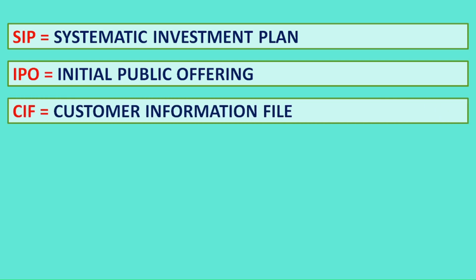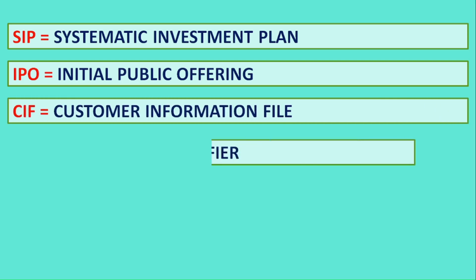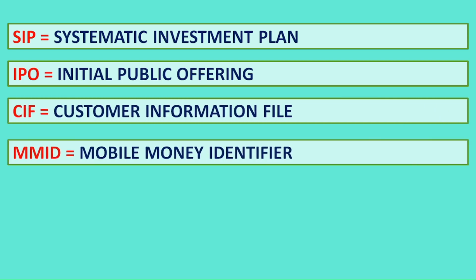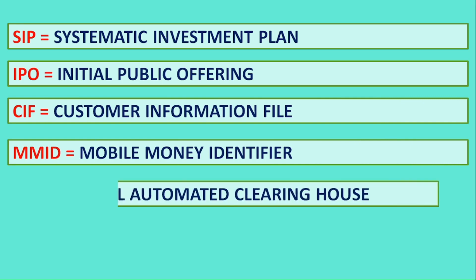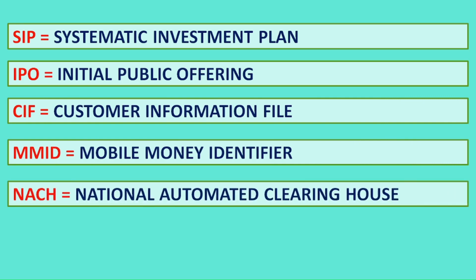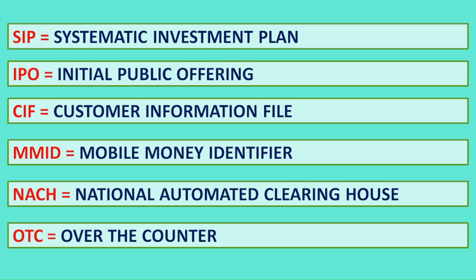CIF: Customer Information File. MMID: Mobile Money Identifier. NACH: National Automated Clearing House. OTC: Over the Counter.